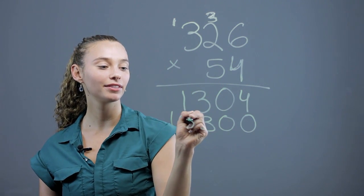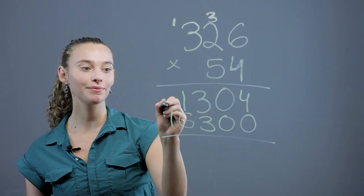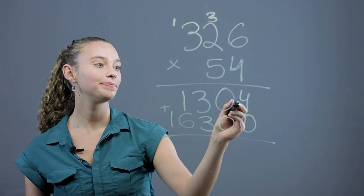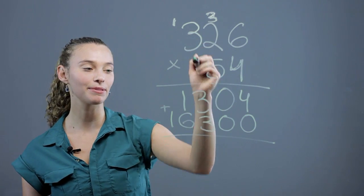Now we line it up. Now that we have all these numbers, we just add them together. You're adding the two products that you got from the 4 and the 5.